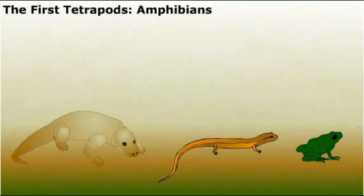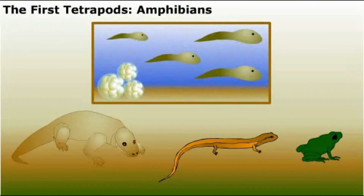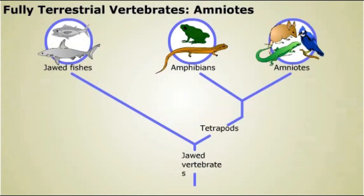Like their modern relatives, such as frogs and salamanders, the first amphibians depended on liquid water for survival. Most present-day amphibians spend part or all of their lives in the water. The next important adaptations to appear enabled vertebrates to fully colonize the land and reduced their dependence on liquid water.